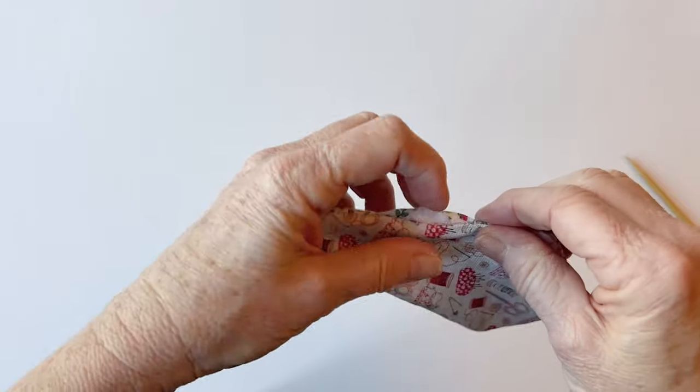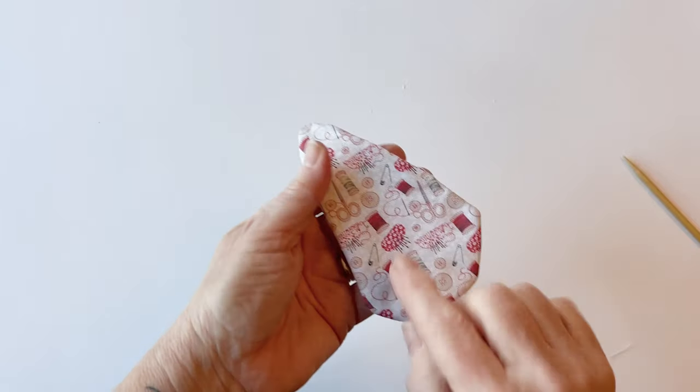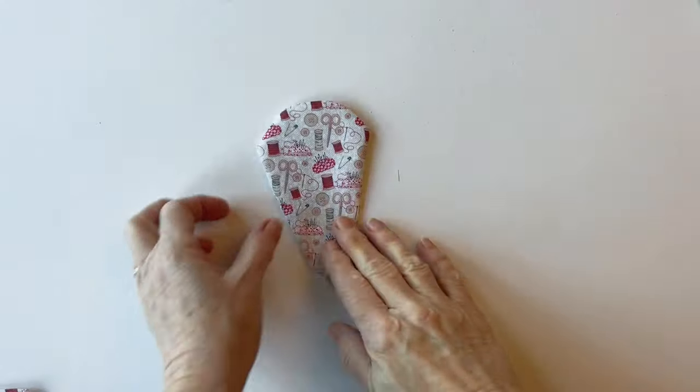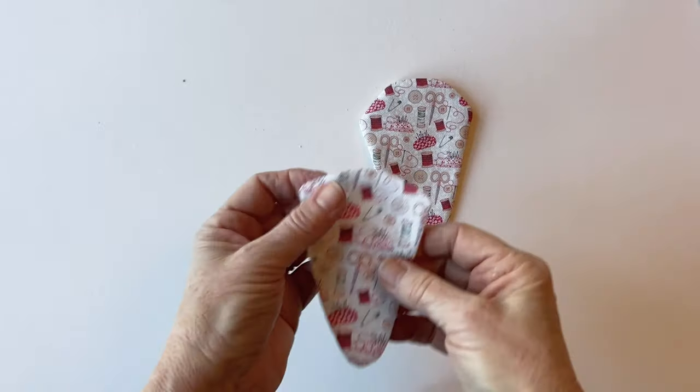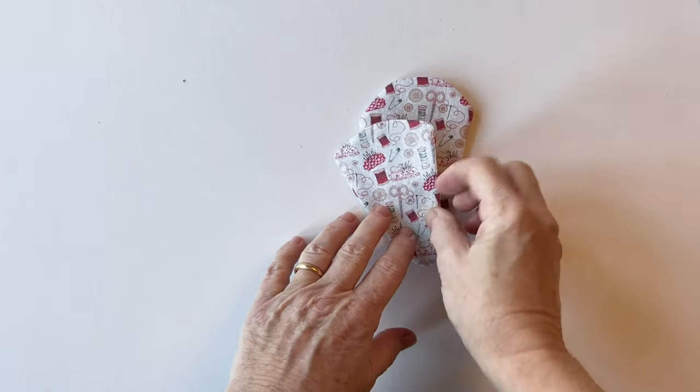Remember to fold the edges of the turning gap back under to the inside because they pull out while you're turning it right sides out. There's the case front finished and the case back finished. You're ready for the next stage.